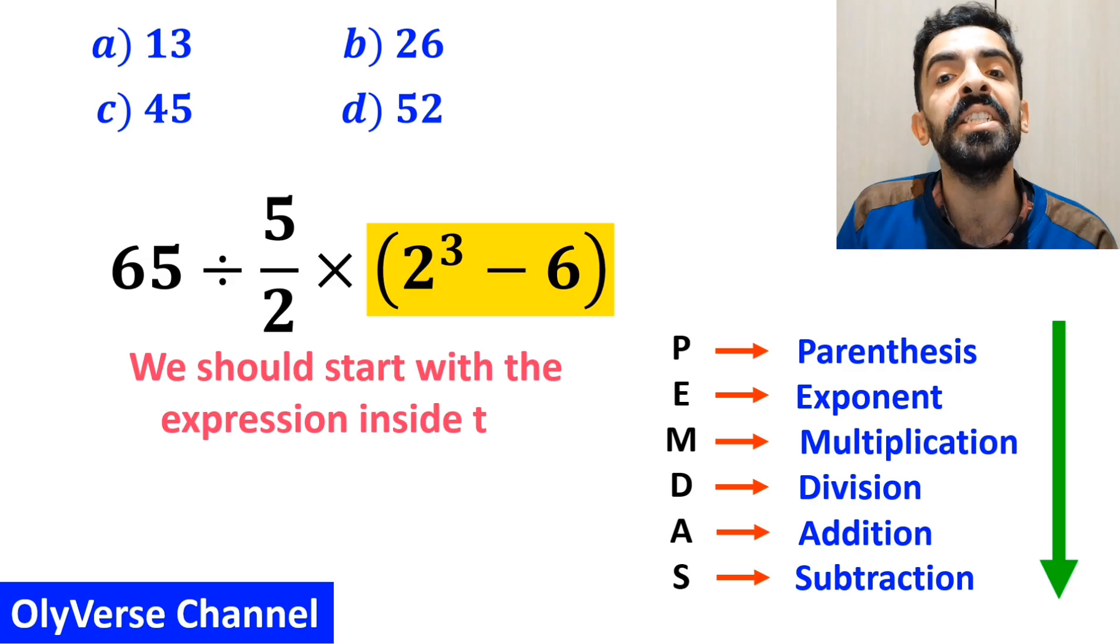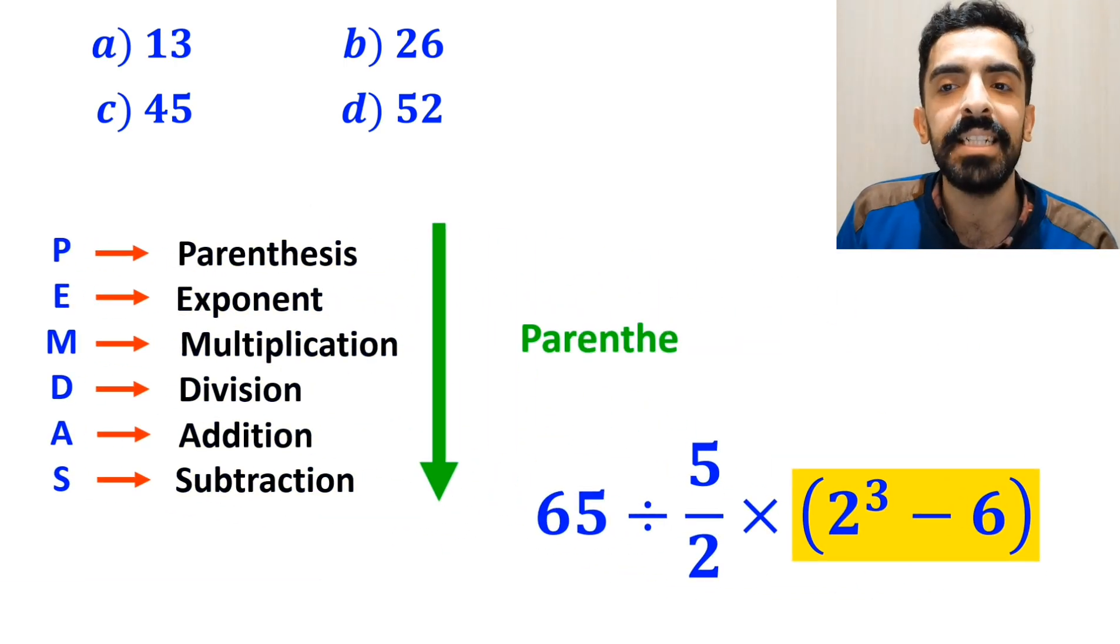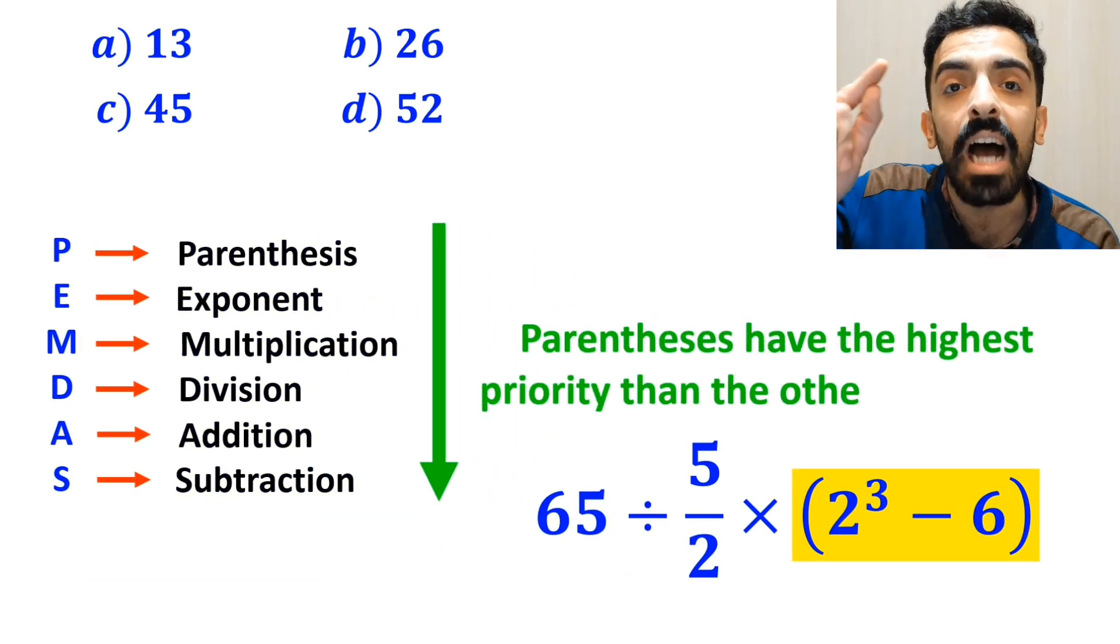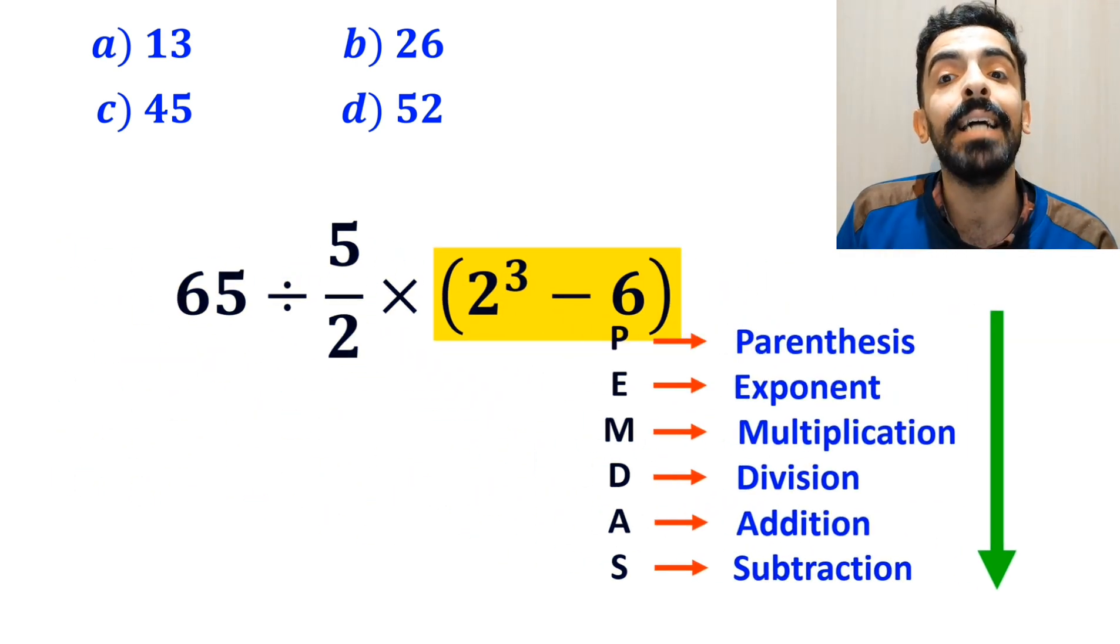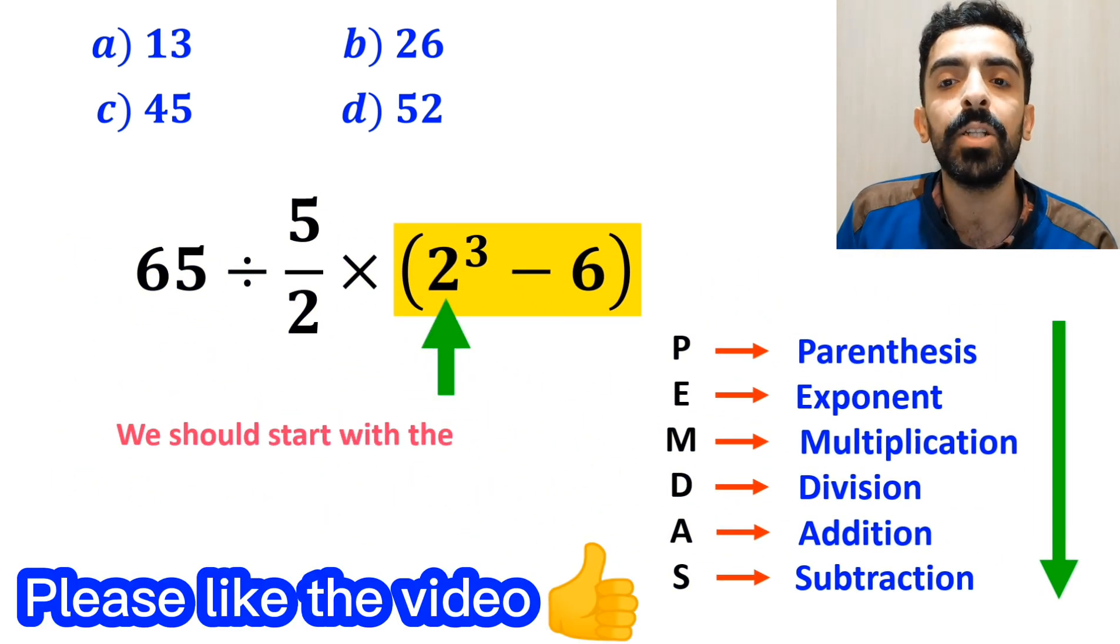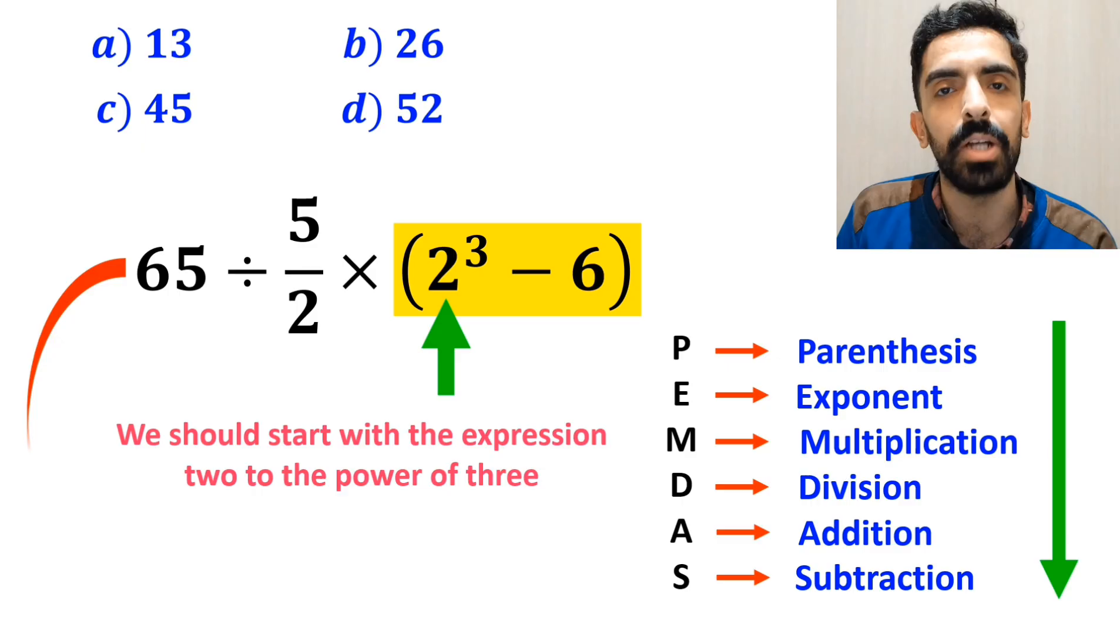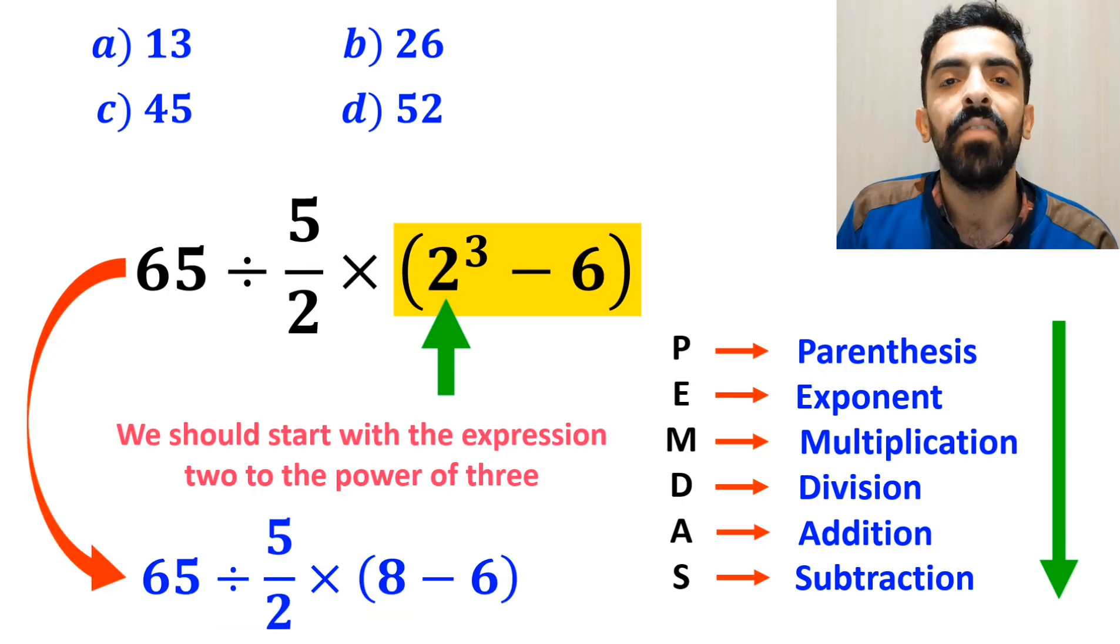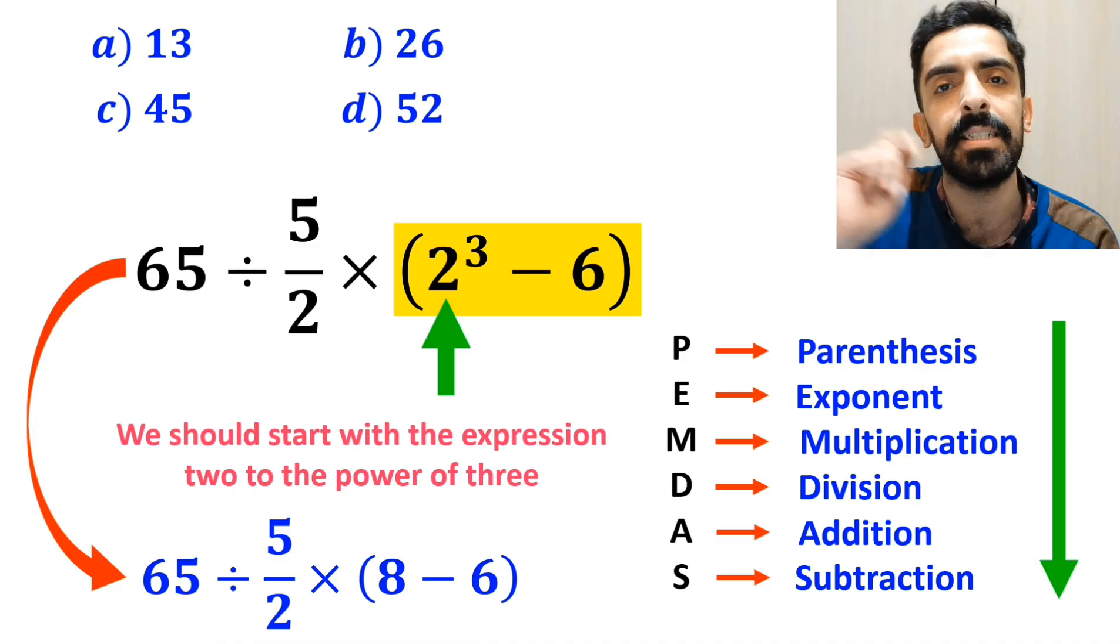So we should start with the expression inside the parentheses first, because parentheses have the highest priority. And inside the parentheses, we should solve the expression 2 to the power of 3. So instead of this expression, we can write 65 divided by 5 over 2 times 8 minus 6 inside the parentheses.